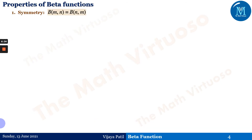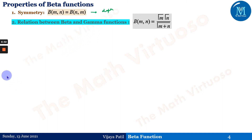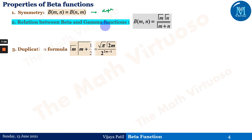Now the properties of the beta function. First is the very important symmetry property: beta(m, n) = beta(n, m). You can verify this using the definition of the beta function. Second is the relation between beta and gamma functions: beta(m, n) = [Γ(m) · Γ(n)] / Γ(m + n).